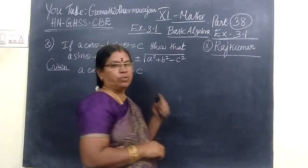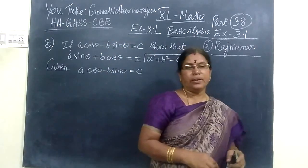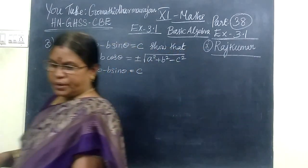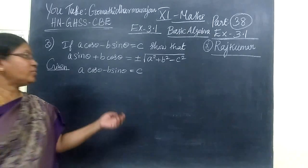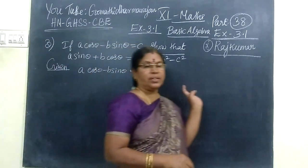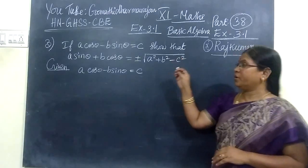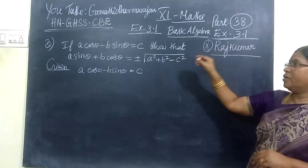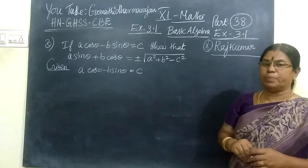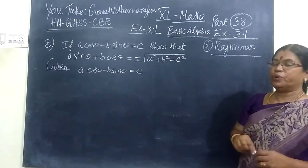Good evening students. Now we want to take part 38 and this is for 12th standard business journal, exercise 3.1. One student has asked to take the 12th chapter on trigonometric identities. For him, I am going to take it.